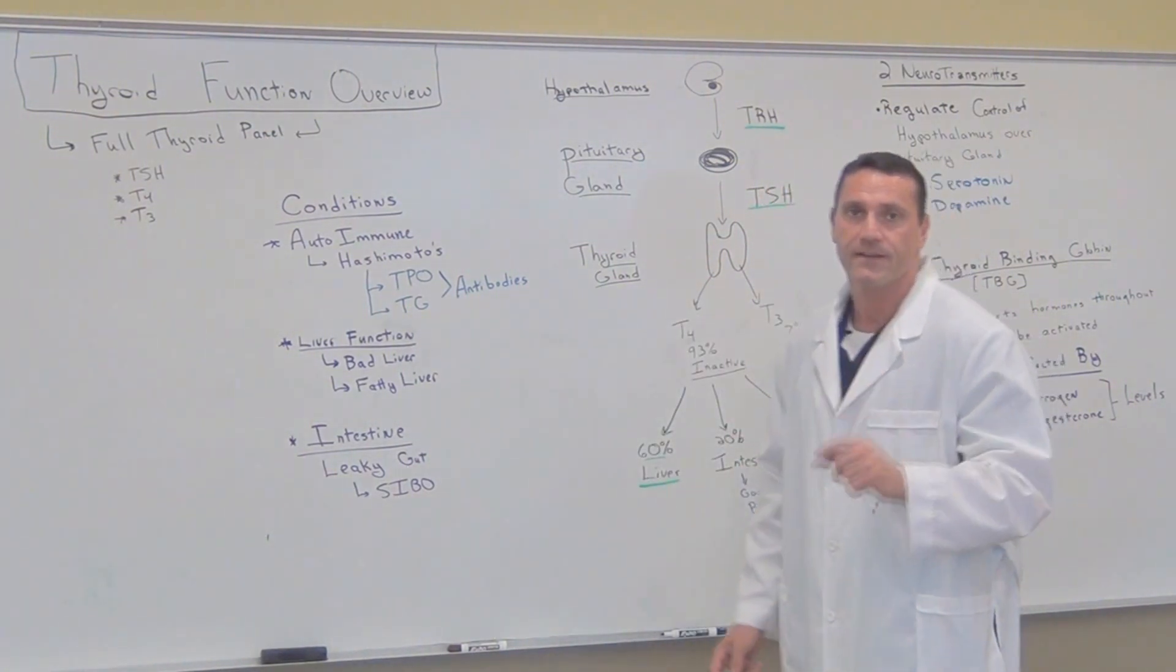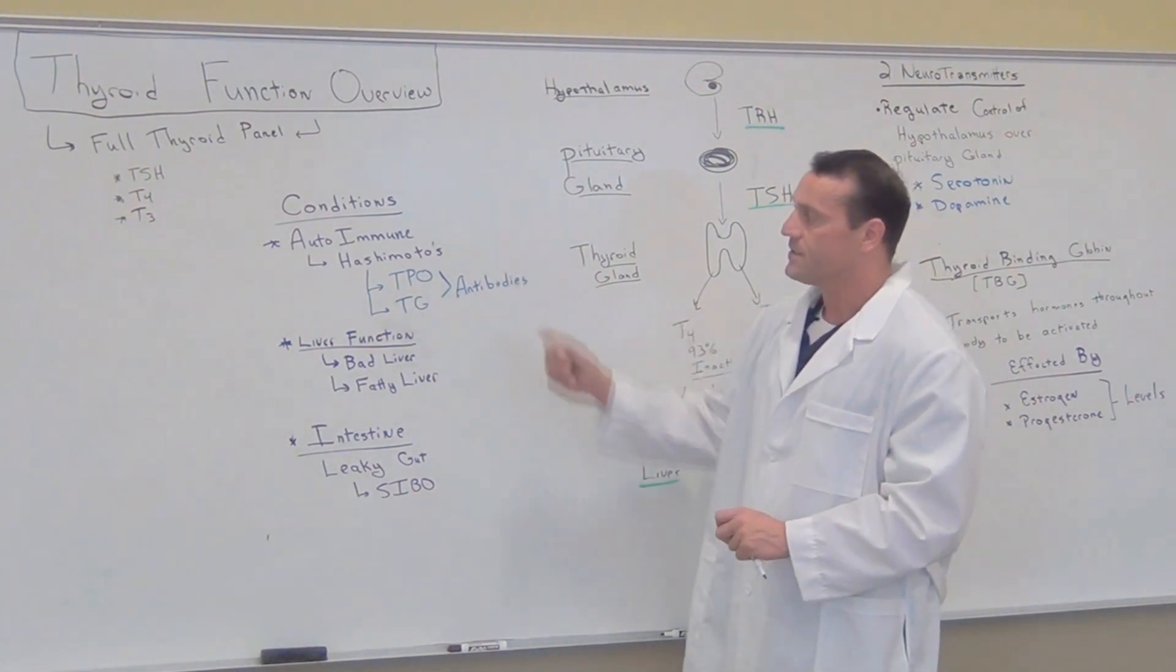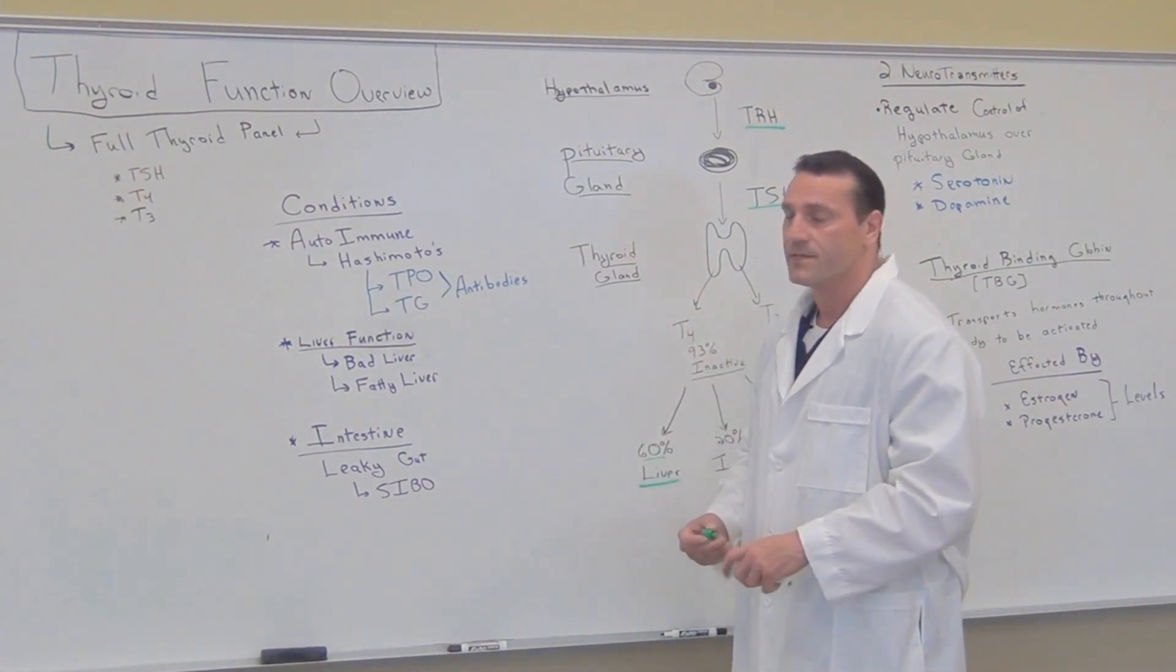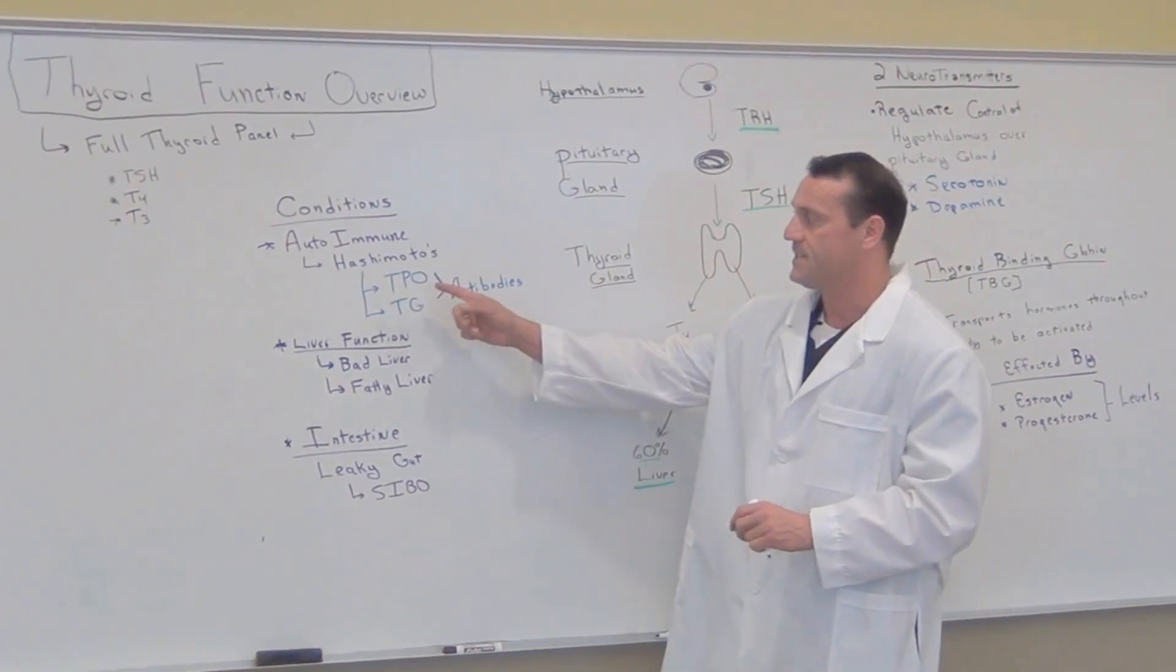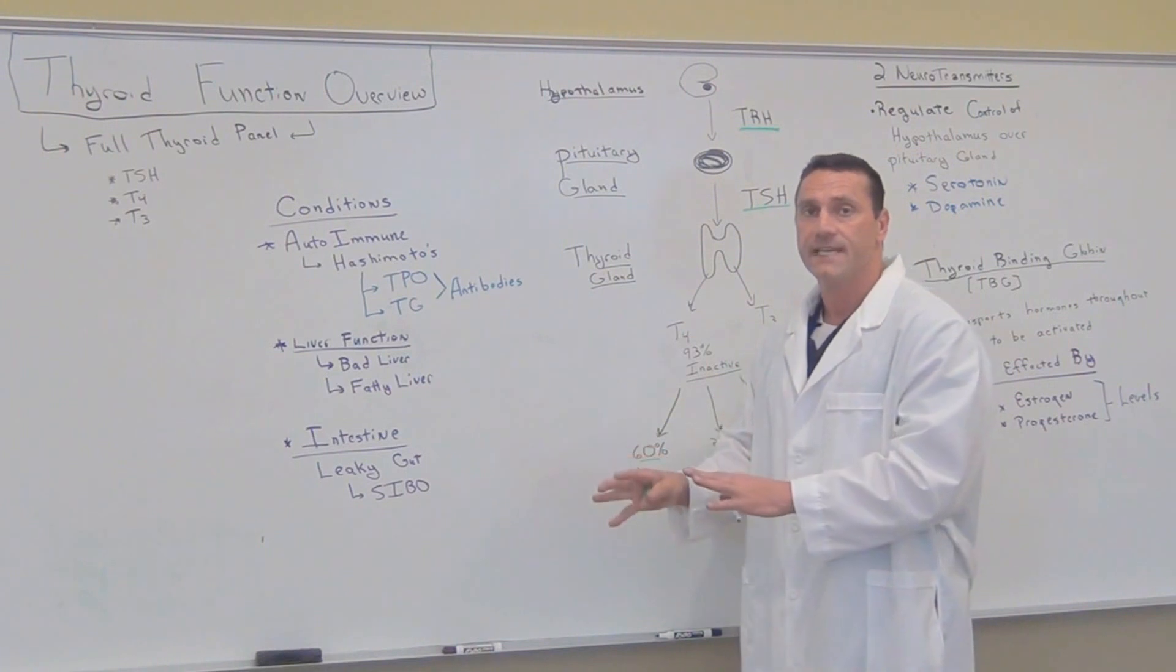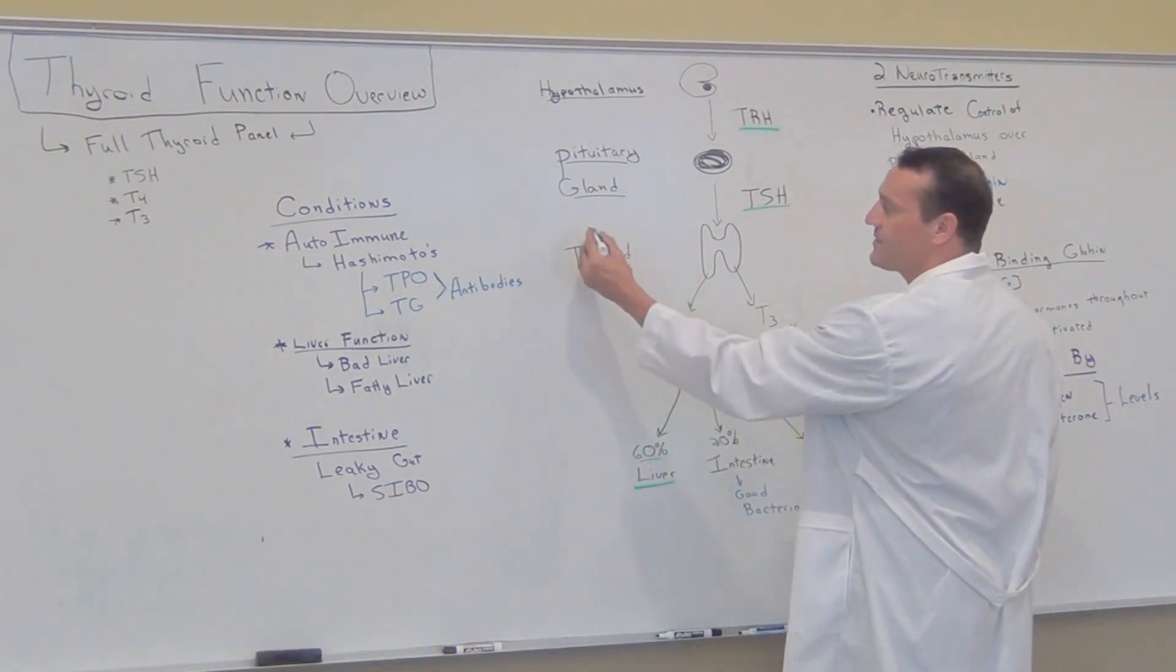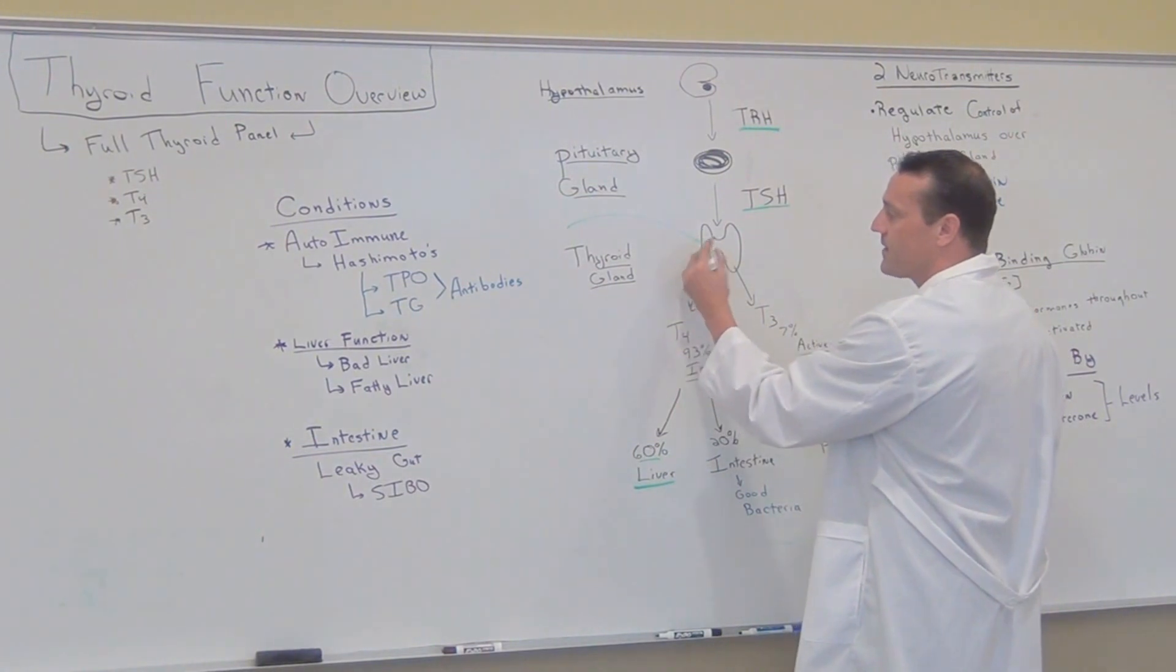So other conditions that will affect the thyroid hormone is there's an autoimmune disease called Hashimoto's. That's why we test the TPO and the TG antibodies. Now, Hashimoto's, it's an autoimmune disease that attacks the target tissue of the thyroid. So you're actually affecting the thyroid gland, the target tissue.